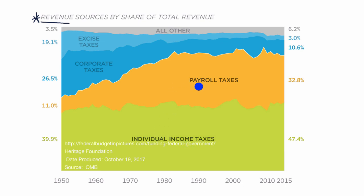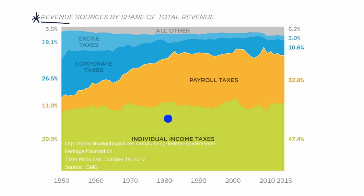Then you have payroll taxes. Unless you are an employer, you might not be familiar with payroll taxes. Above and beyond your individual income taxes, your employer also pays taxes called payroll taxes. These are primarily to pay for things like Social Security, Medicare, and unemployment insurance. And yes, above and beyond what is individually paid by you, they also take payroll taxes to fund that.